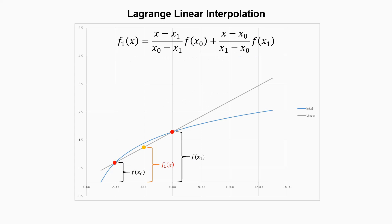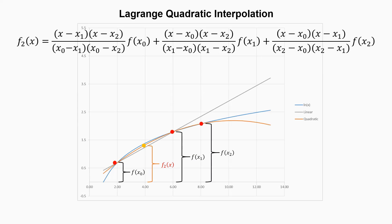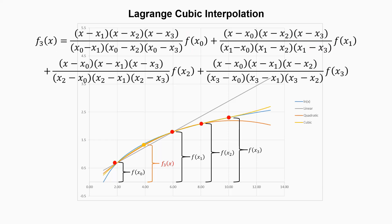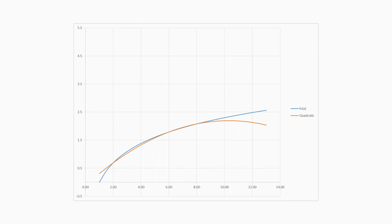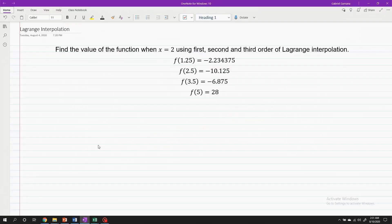If we have another data point, we can enhance the accuracy of the interpolation by updating the Lagrange equation from linear to quadratic, where again, this is the capital pi, and these are the function values. If we have another dataset, we can update the Lagrange to further enhance the accuracy. To visualize this idea, if I isolate the graph of interpolation per degree, you will notice that as the degree increases, the Lagrange polynomial gradually copies the characteristic of the exact equation.